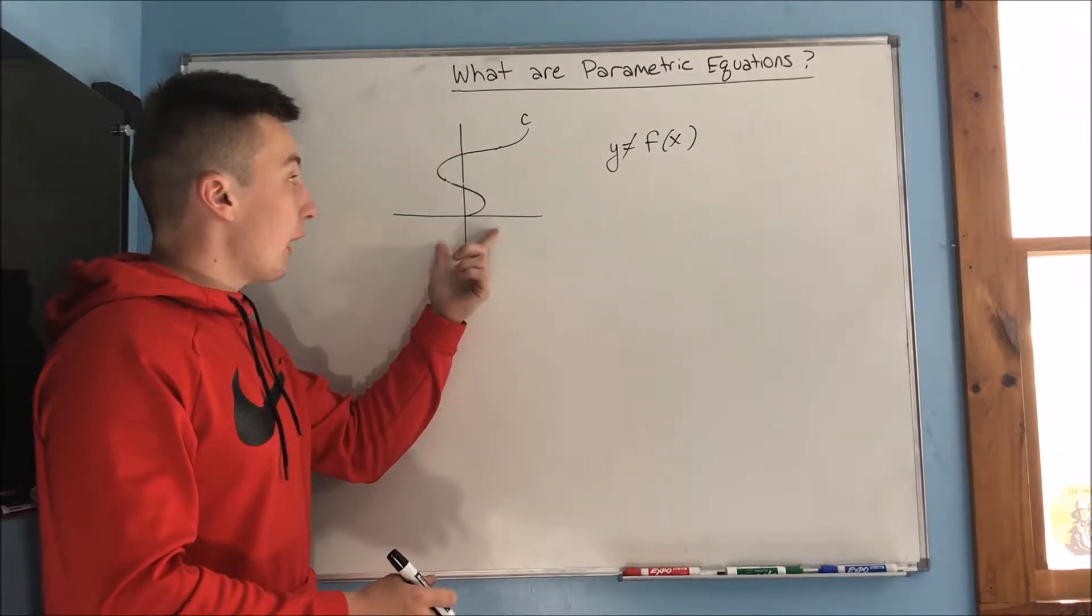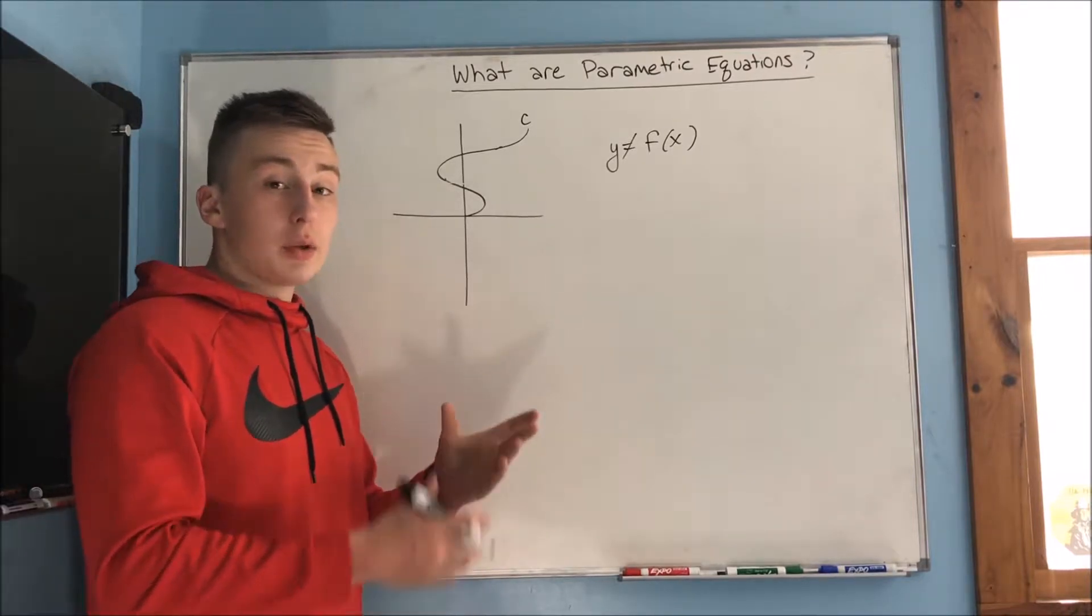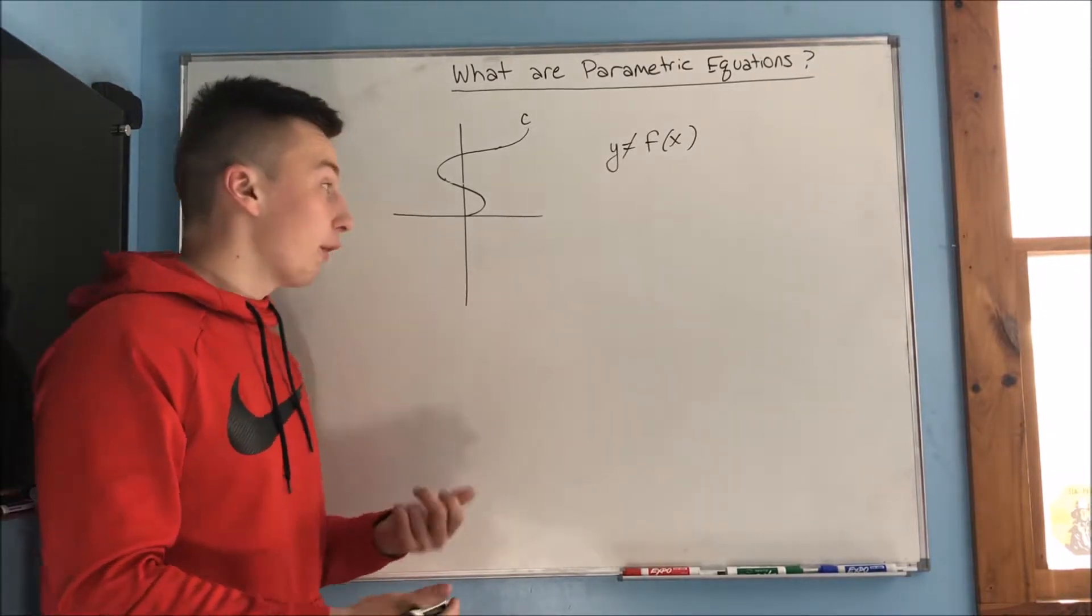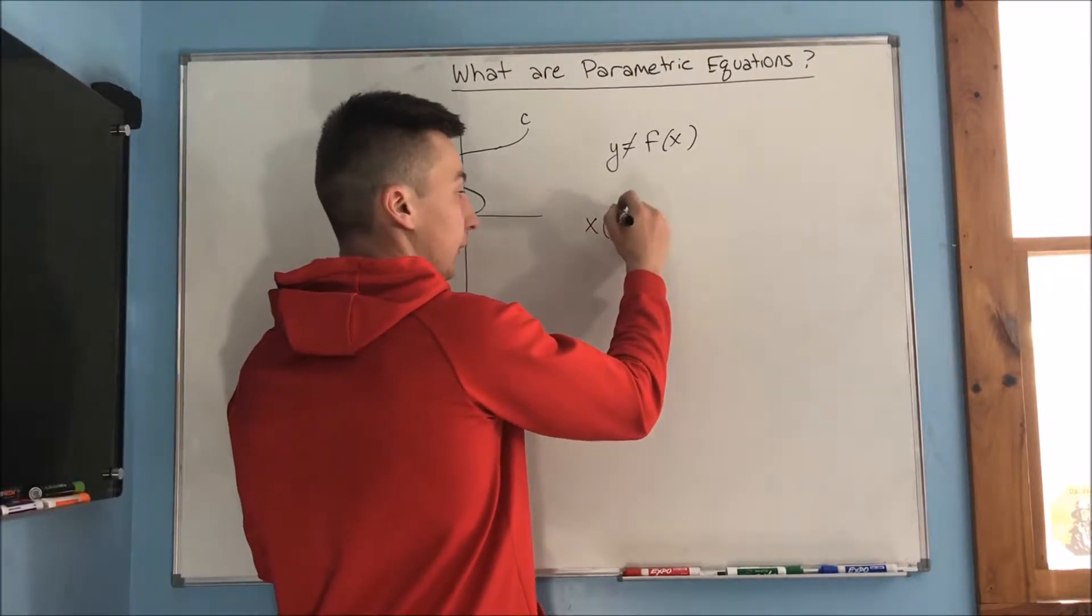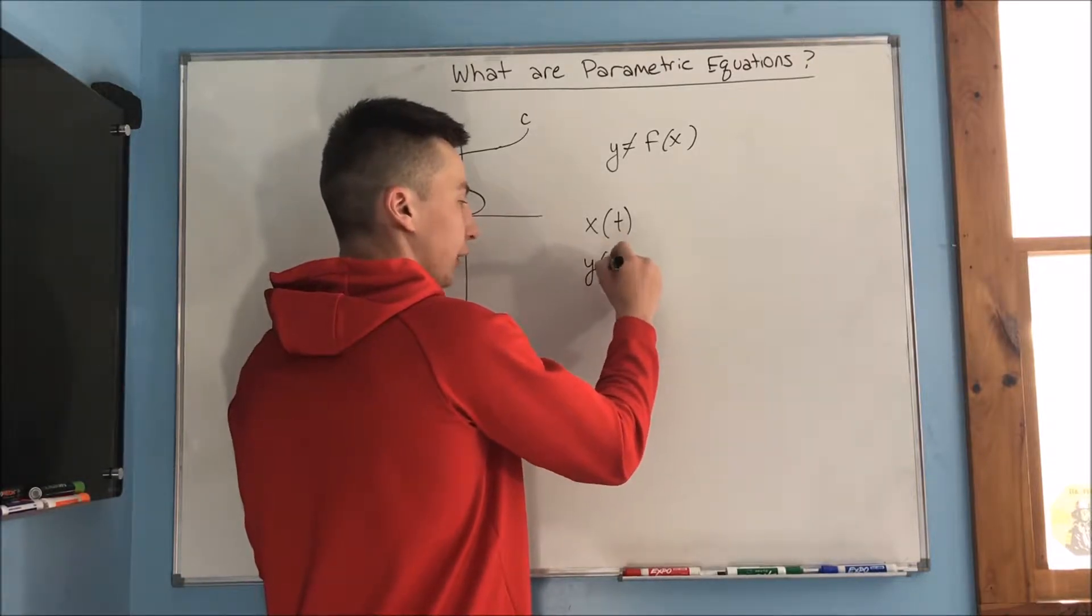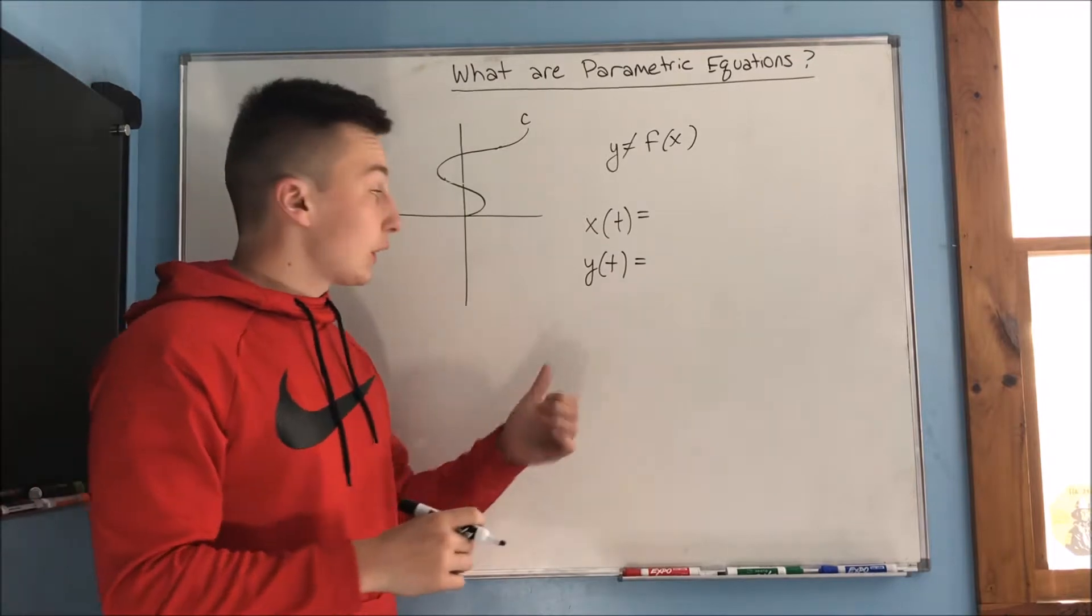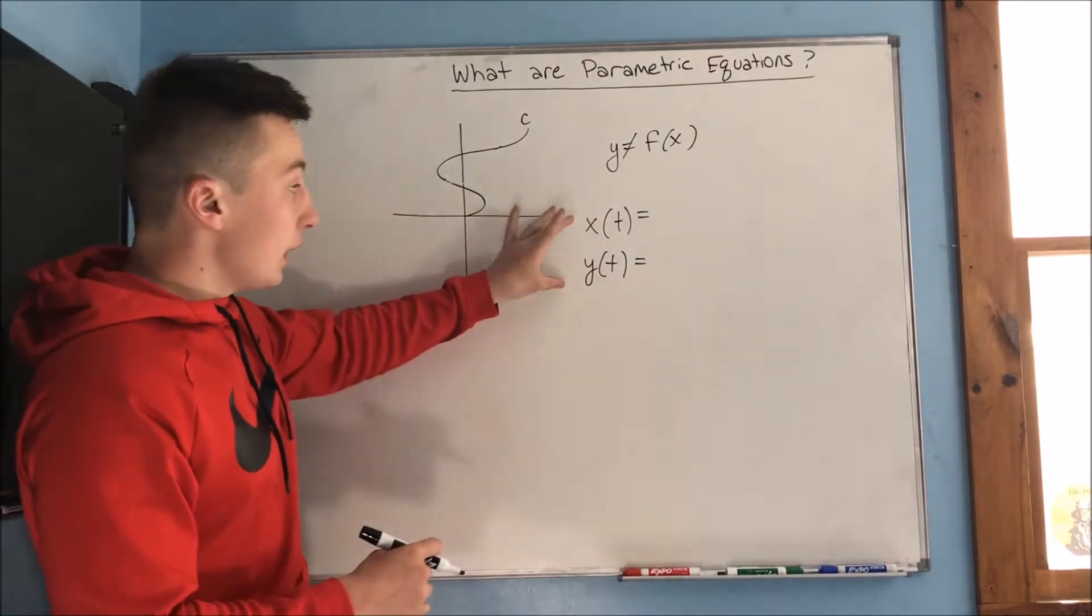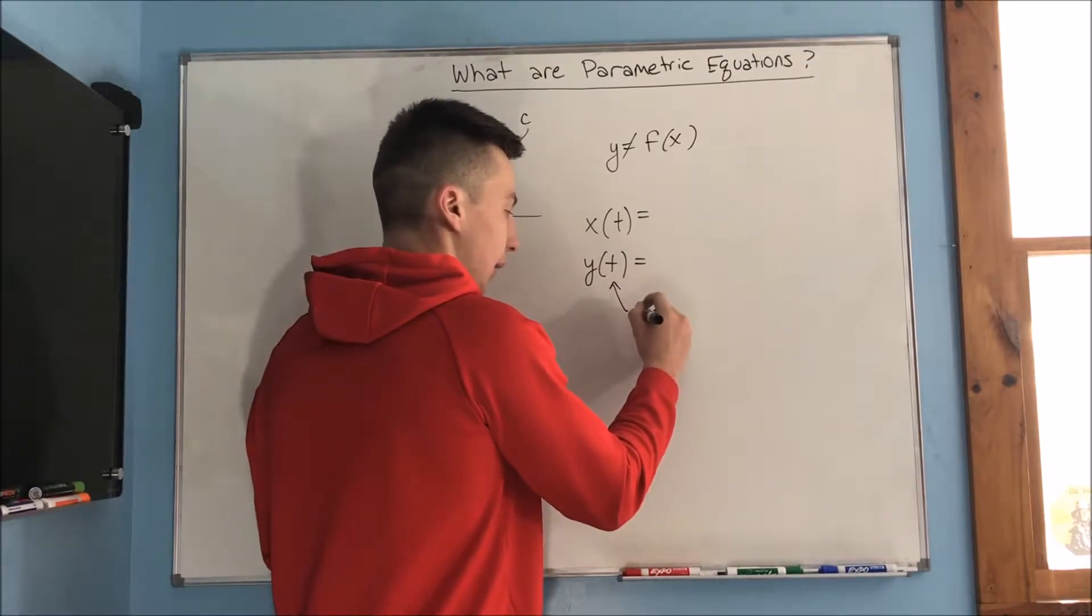So what we would have to do to be able to graph something like this is describe the motion of x and the motion of y separately in two different functions. It would be x as a function of t - t is going to be a new variable - and y as a function of t. Now t is called the parameter, these are parametric equations, so t is going to be a parameter.